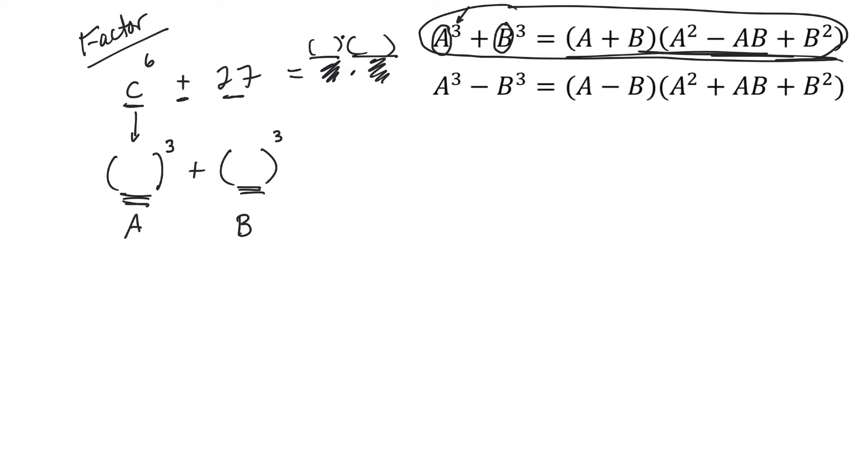Okay, so I know it's going to be C to the something, so I have to have something times 3 that gives me 6. So this is going to be a 2. So my A, wherever I see an A, and I can write this here, anytime I see an A, I'm going to replace that with a C squared.